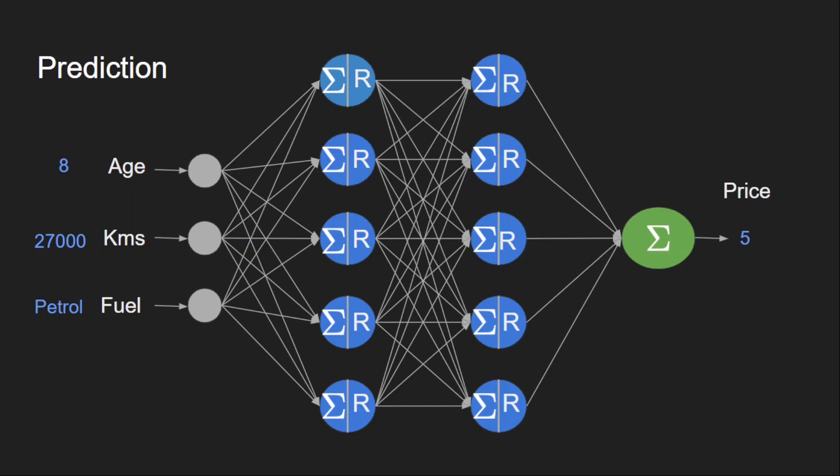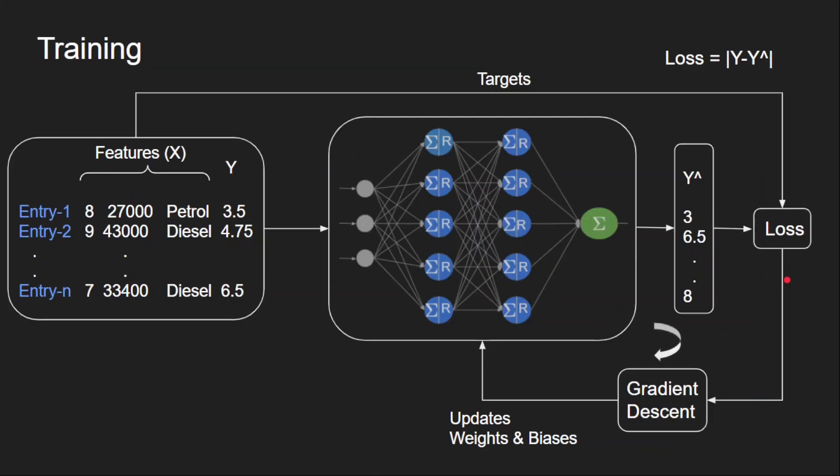We have seen the classification example in the last video. The difference between these two cases, regression and classification, are the choice of activation functions and the loss function. Apart from these, all the other setup looks the same. In the coming videos, we will see different loss functions we use here for regression as well as classification.